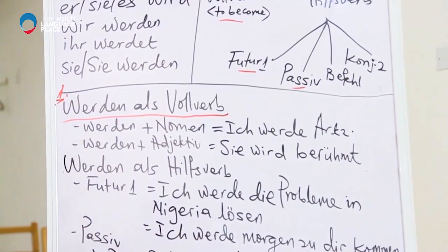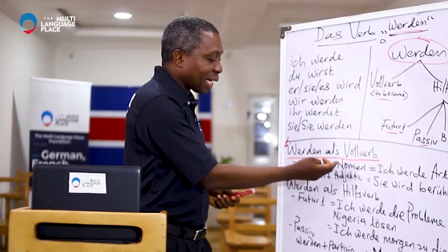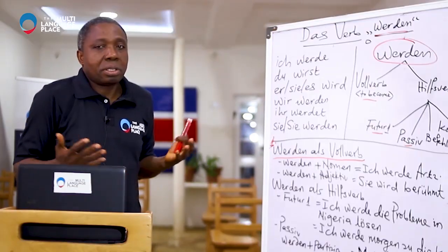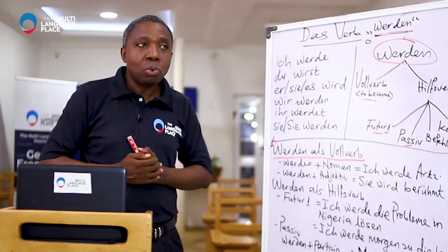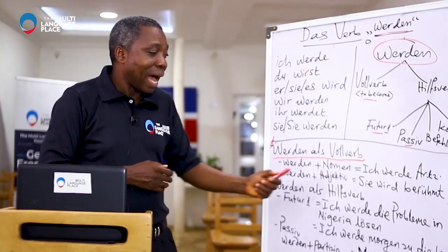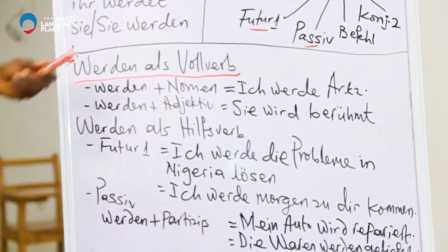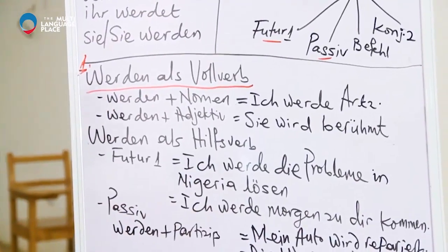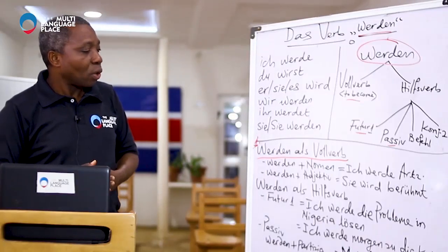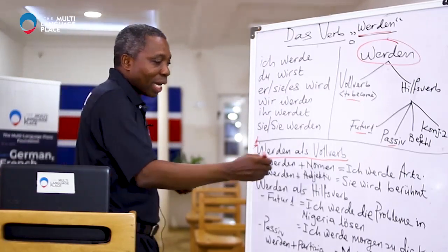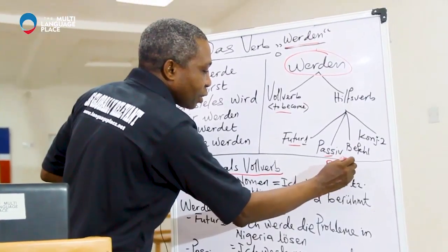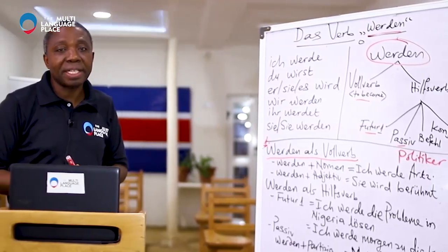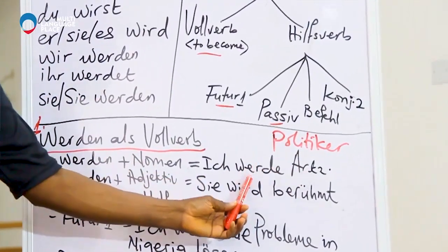Werden plus noun — remember, master the conjugation. Ich werde Arzt. Here is a young person who desires to be a doctor. The meaning of the verb werden is 'to become' — I want to become a doctor. He's not yet a doctor; he desires it. You can also say: Ich werde Politiker. When it comes to profession, what you want to become, we use the verb werden followed by a noun.